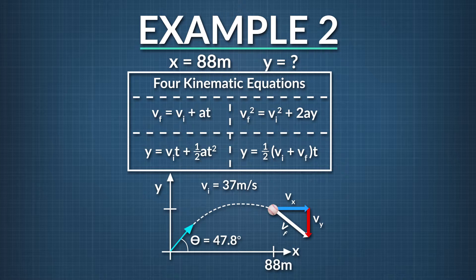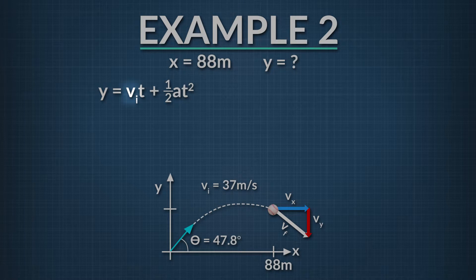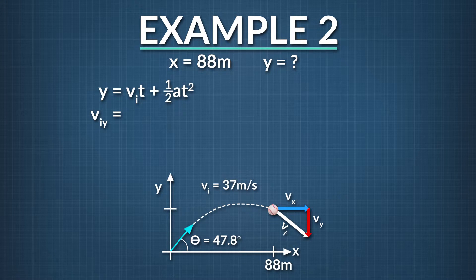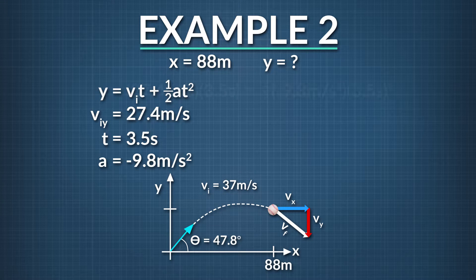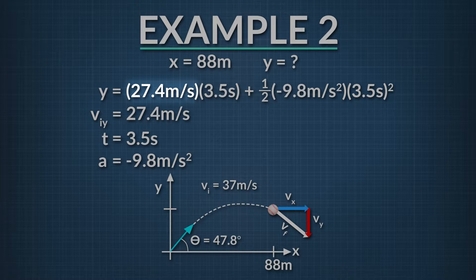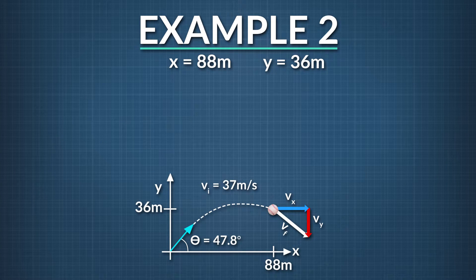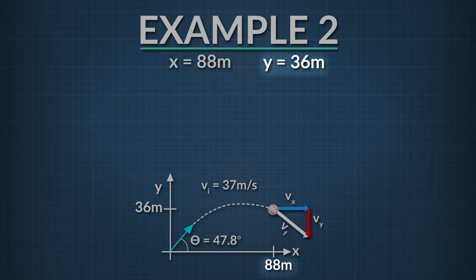For the ball's vertical position at time 3.5 seconds, we use one of our acceleration equations. It looks like we have enough information to use the third equation: y equals initial velocity in the y-direction times time, plus one-half acceleration times time squared. Our initial velocity in the y-direction is equal to 37 meters per second times the sine of 47.8 degrees, which equals 27.4 meters per second. Time is 3.5 seconds, and acceleration is negative 9.8 meters per second squared. When we plug our values into our equation, we get y equals 27.4 meters per second times 3.5 seconds, plus one-half times negative 9.8 meters per second squared times 3.5 seconds squared. This equals 36 meters. The position of the baseball at t equals 3.5 seconds is 88 meters in the x-direction and 36 meters in the y-direction.